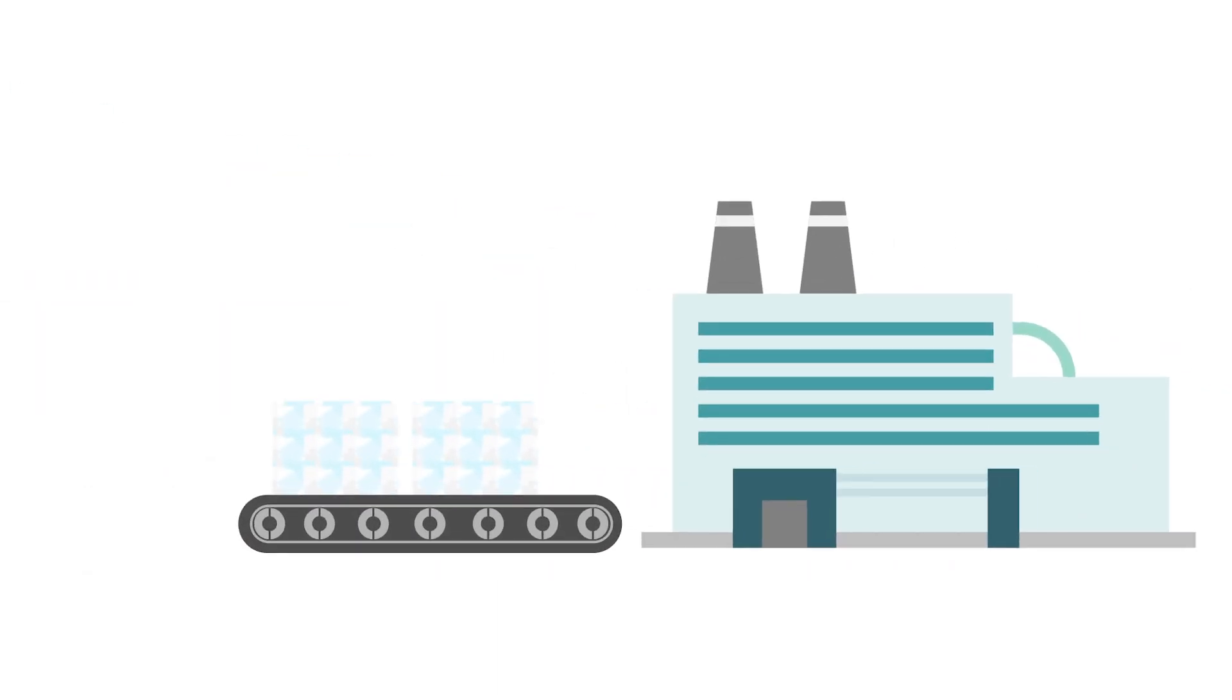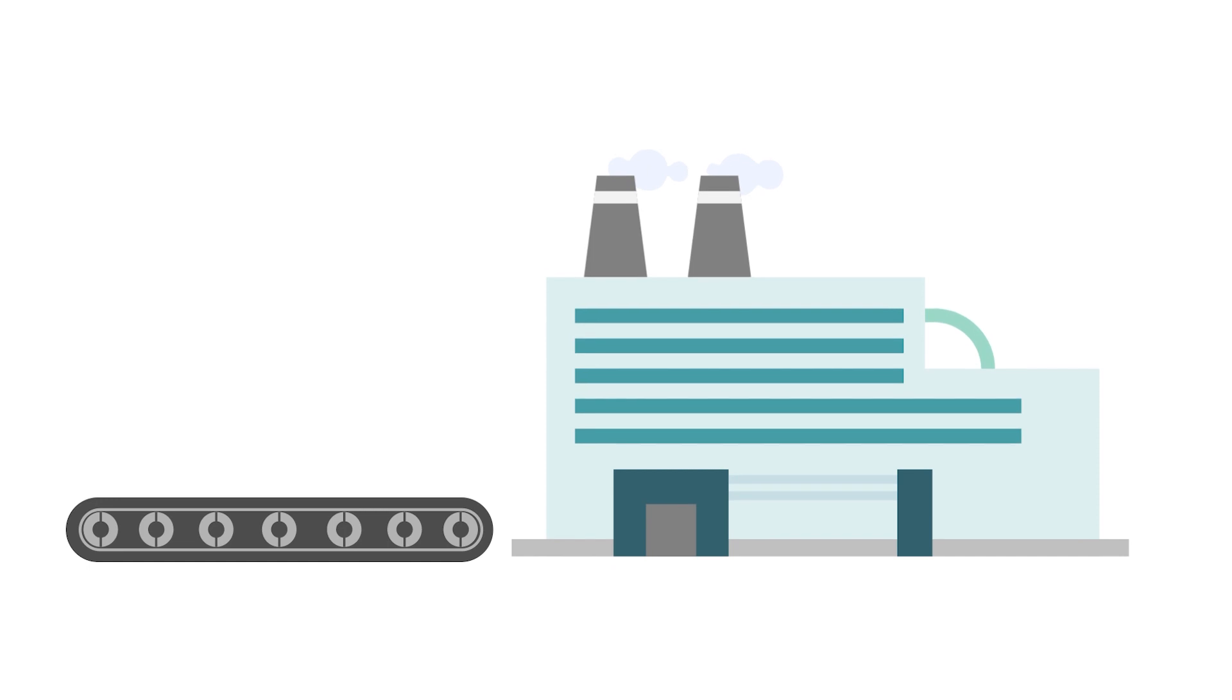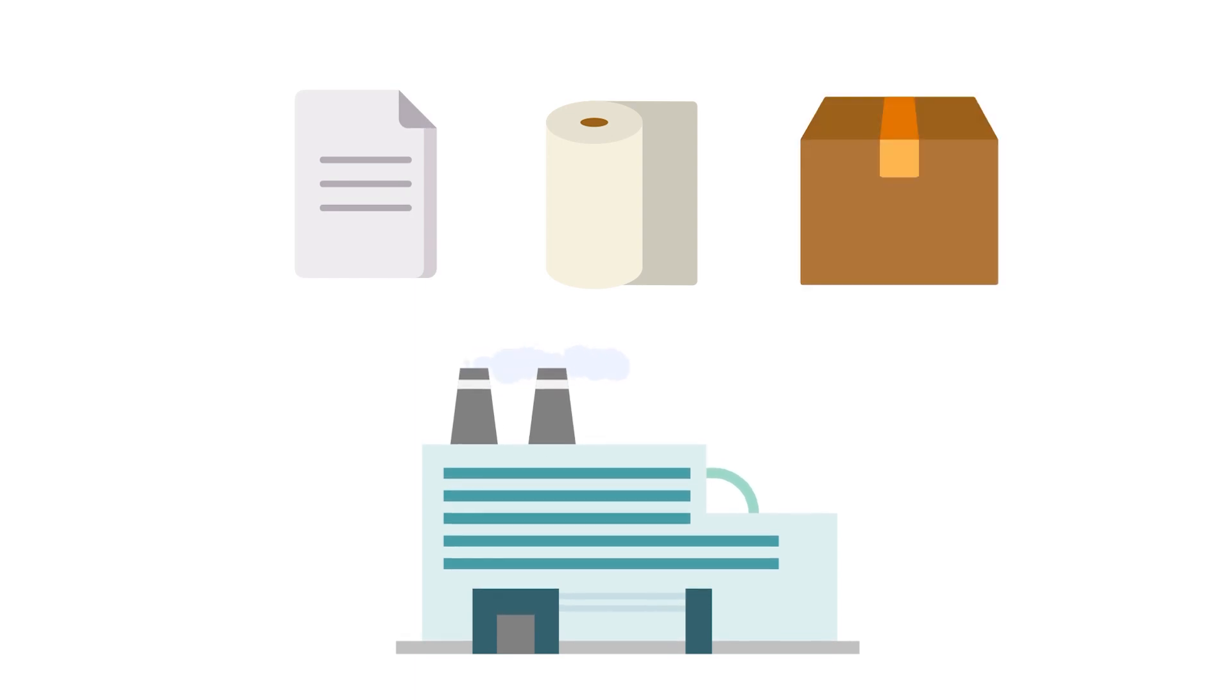Then, they're shipped to paper mills around the Midwest. The bundles are broken down into fibers and repurposed into recycled paper goods, like paper towels, printing paper, and corrugated packaging.